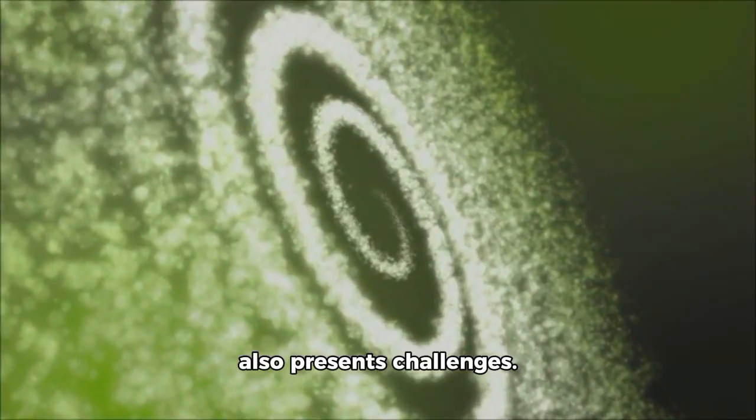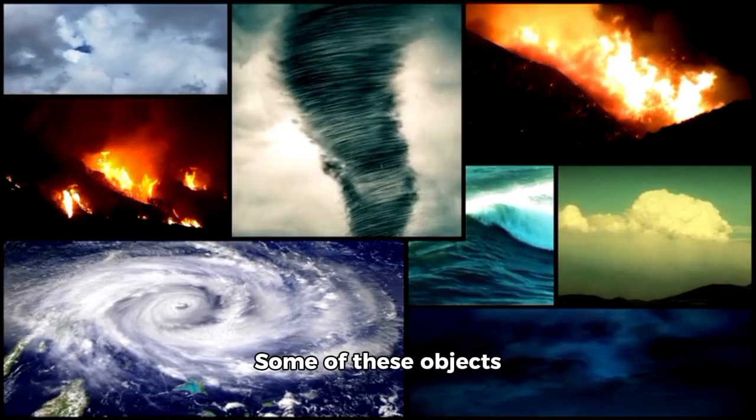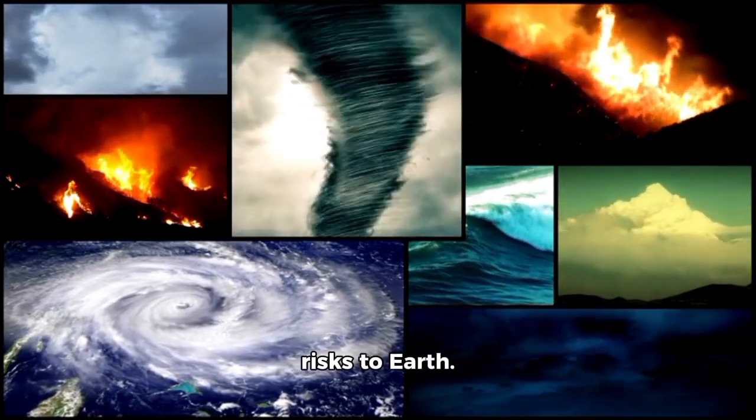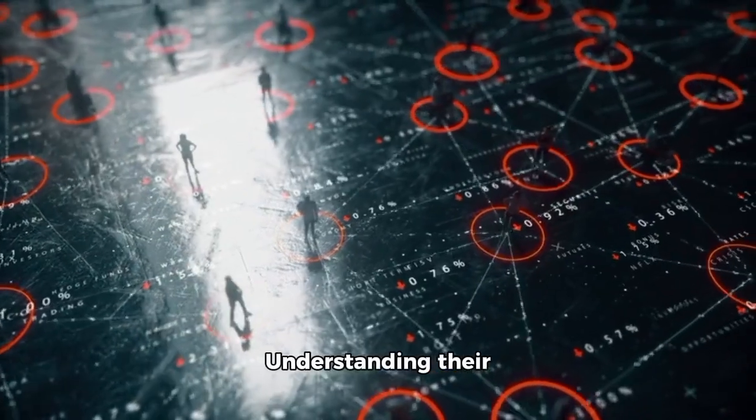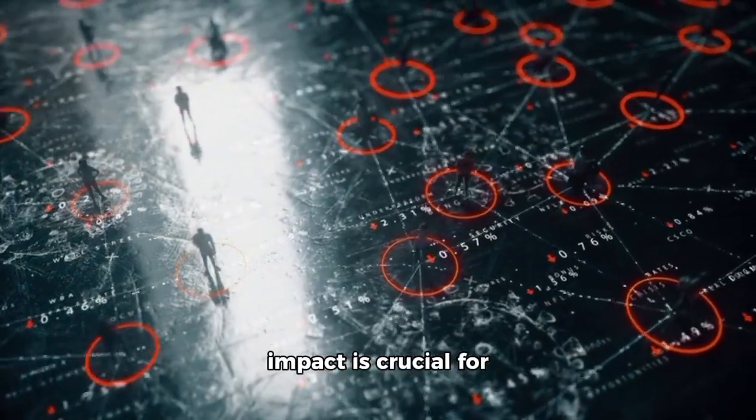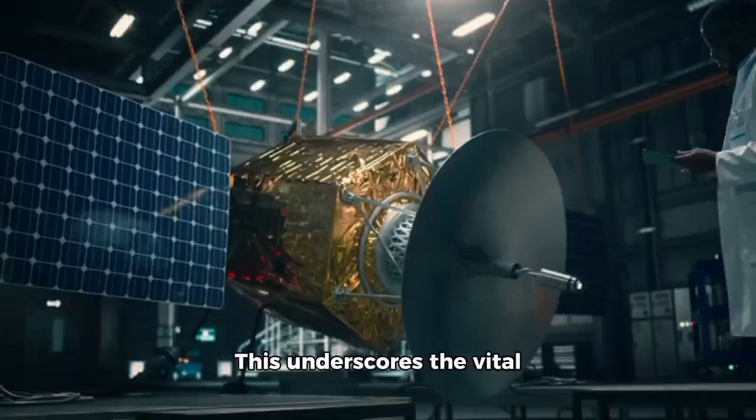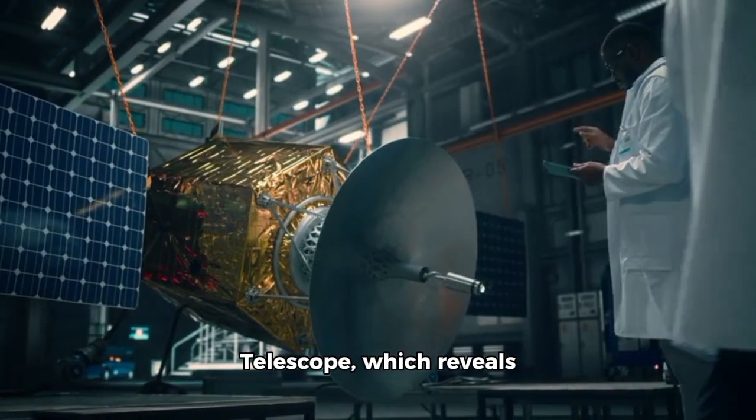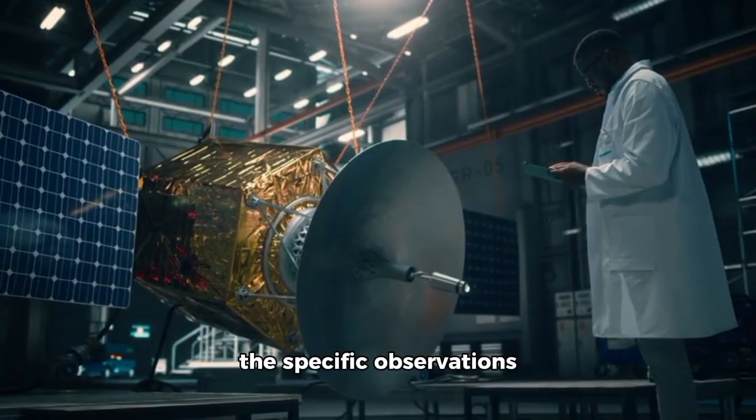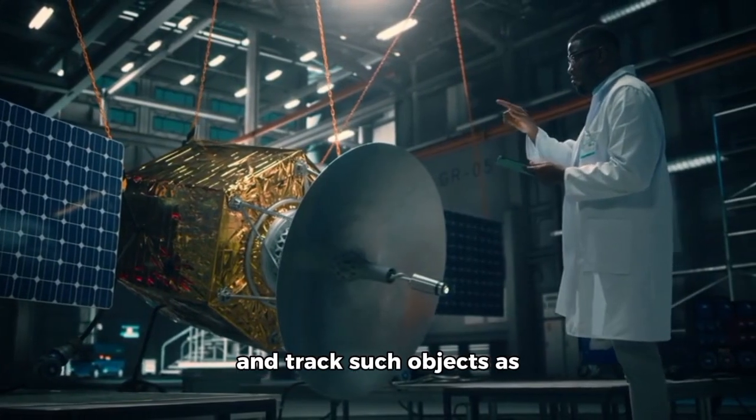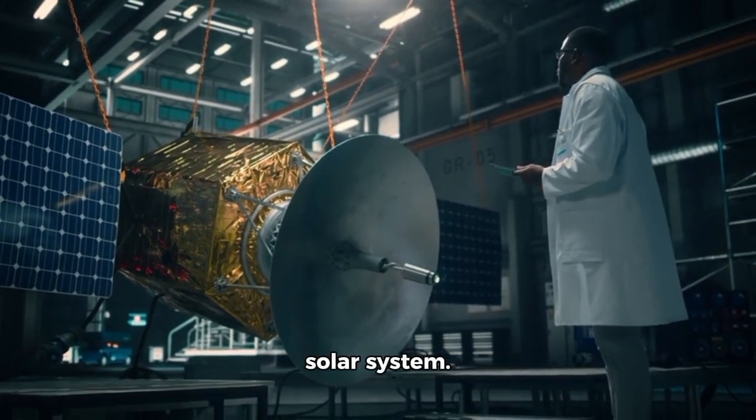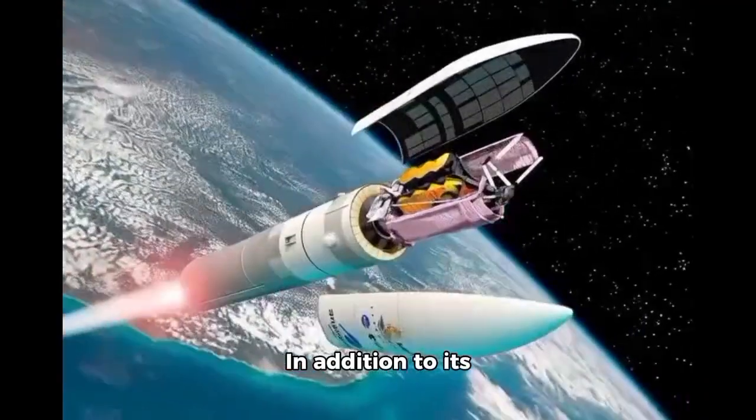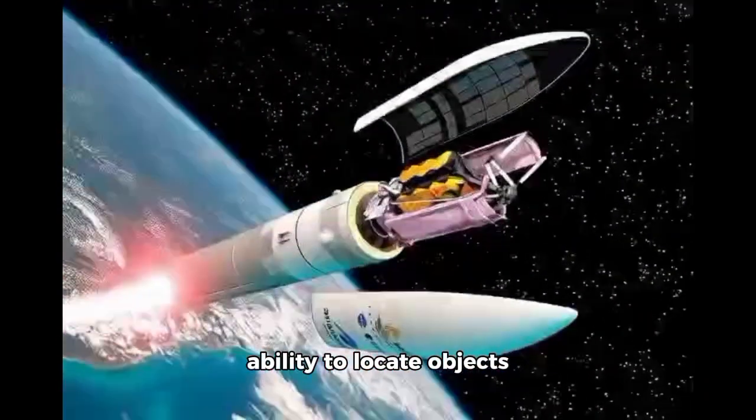While the existence of these unidentified objects is exciting, it also presents challenges. Some of these objects may pose unforeseen risks to Earth. Understanding their movements and potential impact is crucial for preparing for any future threats. This underscores the vital role of the James Webb Telescope, which reveals the specific observations necessary to understand and track such objects as they move closer to our solar system.